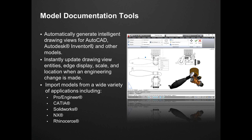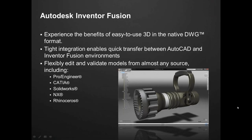You can also import models from a wider variety of applications — your ProEngineer, SolidWorks, NX, and different software like that — that you can now import directly into AutoCAD. Autodesk Inventor Fusion: you'll now install Inventor Fusion with your AutoCAD 2012, so you can experience the benefits of easy-to-use 3D in that native DWG format. It integrates quickly and easily between AutoCAD and the Inventor Fusion environments, and edits and validates models from those other sources like SolidWorks and NX.